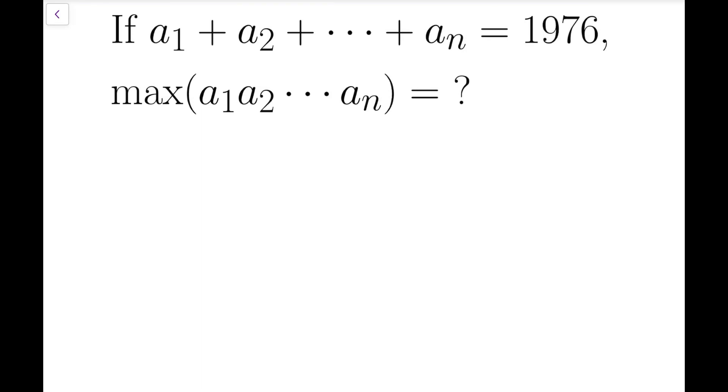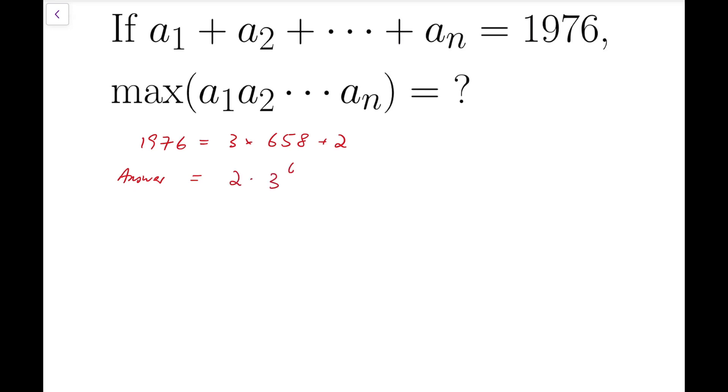Back to our main problem. I'm going to apply the rule that I've obtained to get a rough image of our final answer. Because 1976 is equal to 3 times 658 plus 2, our answer should be very close to something like 2 times 3 to the power of 658. If we've managed to prove that our rule is actually correct, then this is indeed the answer, but we have to prove that first.